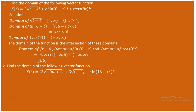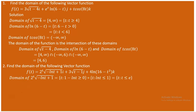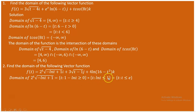For the first component, we find the domain of √(1 - ln(t)). The expression inside must be greater than or equal to zero: 1 - ln(t) ≥ 0, so ln(t) ≤ 1. Raising e to both sides gives t ≤ e. Combined with the natural log requirement t > 0, the domain of this component is (0, e].